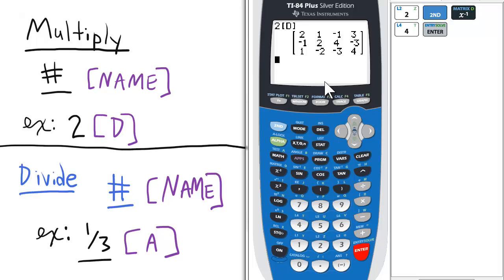Now if we'd like to divide a matrix by a scalar, we just take the number, let's say 1 third, so that's the equivalent of dividing by 3, and then again just the name.